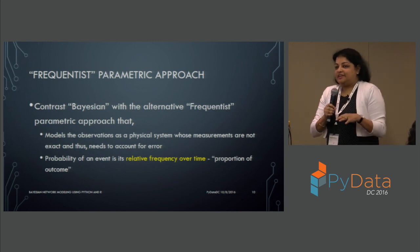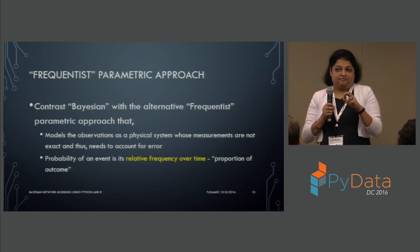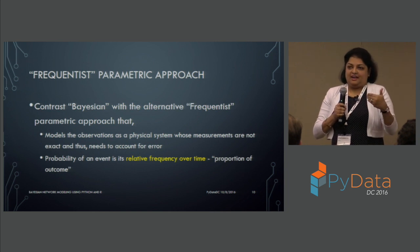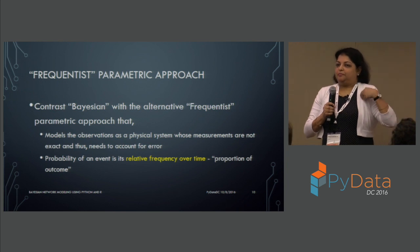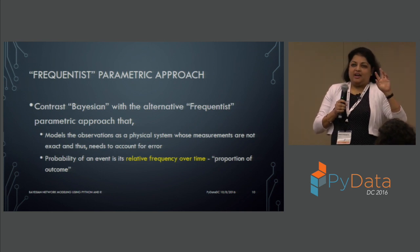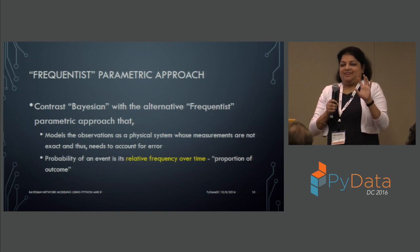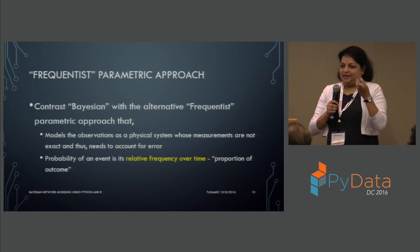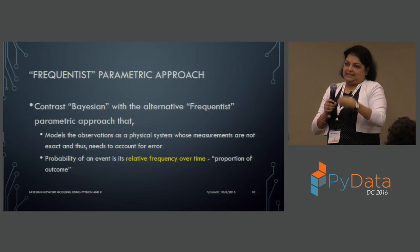In frequentists, they use the term probability, whereas on the Bayesian side they use the term belief. So if an event occurs 20 times out of 100, the frequentist says probability is 0.2, while the Bayesian says the belief is that it will occur 0.2 of the time. You can see there's a significant difference in the way you are looking at both those numbers — in one you still have uncertainty around it, whereas in the Bayesian side there's a belief and an uncertainty for it.